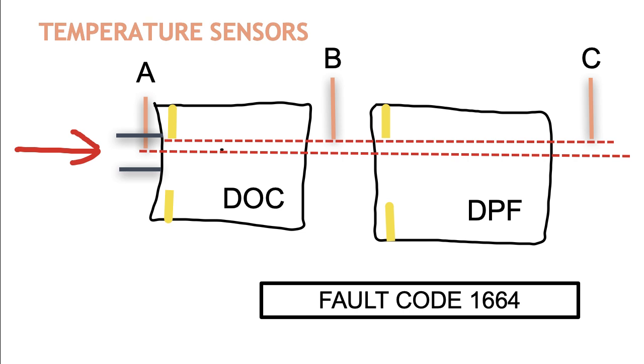So fault code 1664 states that the DOC is completely missing. What does the system use to determine if that's there? Well, the only thing it can use is temperature differential. So it looks at temperature A, and let's say that is 600 degrees for the sake of argument, and you're putting fuel into the catalyst.